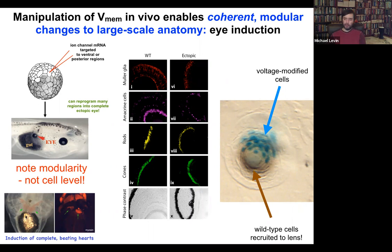We see again and again that there's this ability of bioelectrical signals to not just specify cell fate, but to actually specify organ type and position. So we can make eyes, we can make ectopic hearts, here's a secondary heart, we can make limbs and brains and some other things — and then many things that we can't yet make.